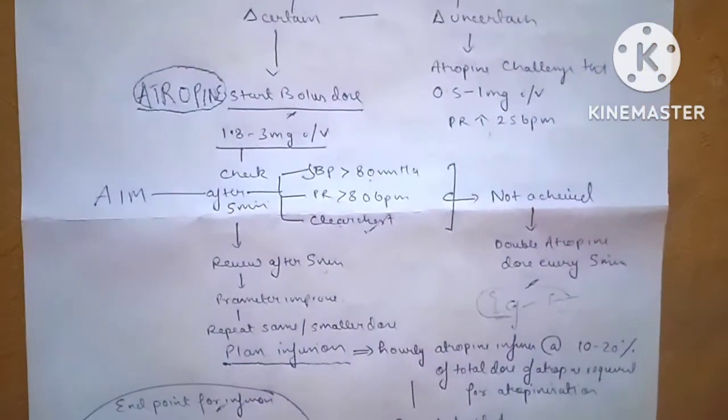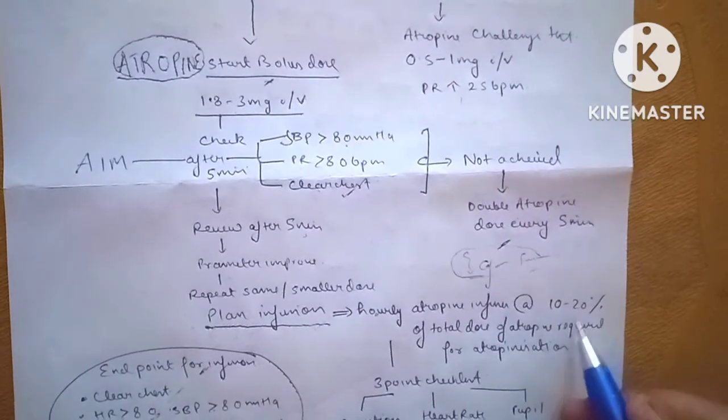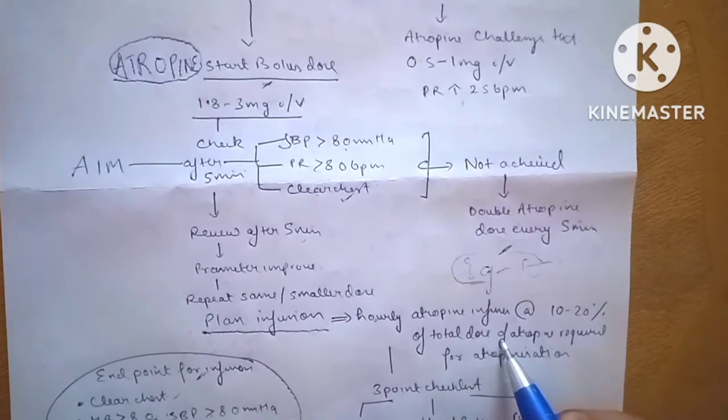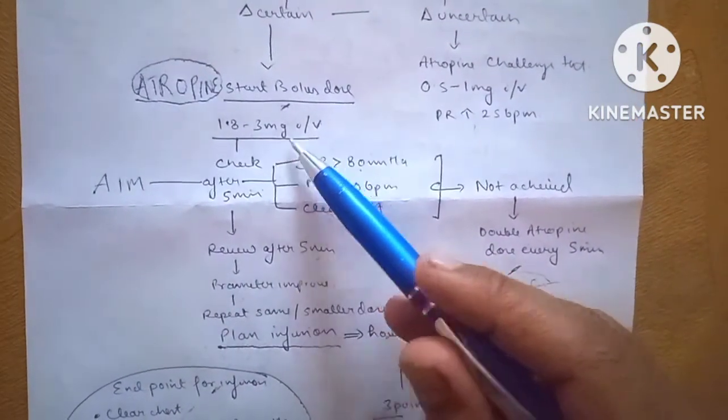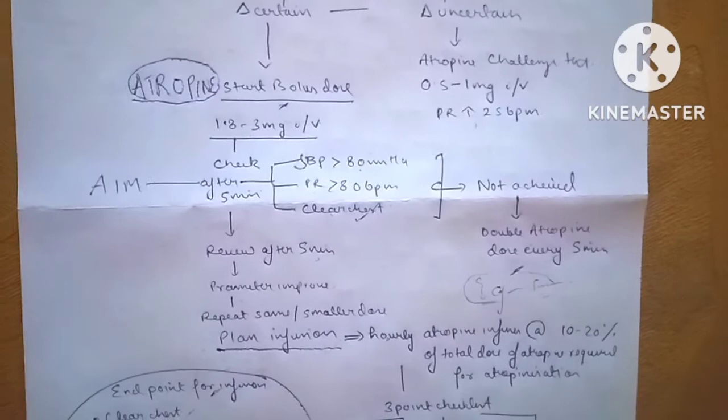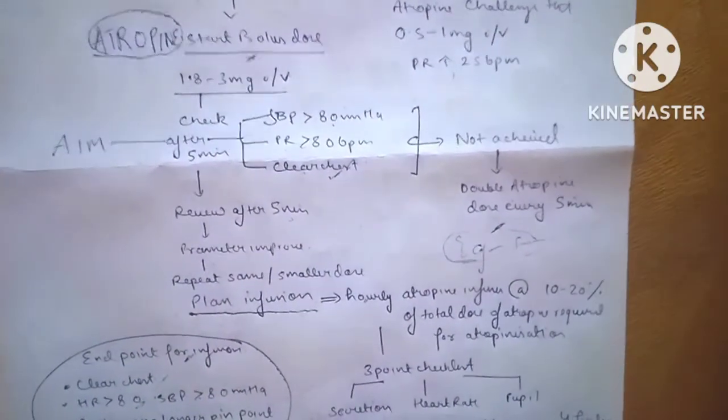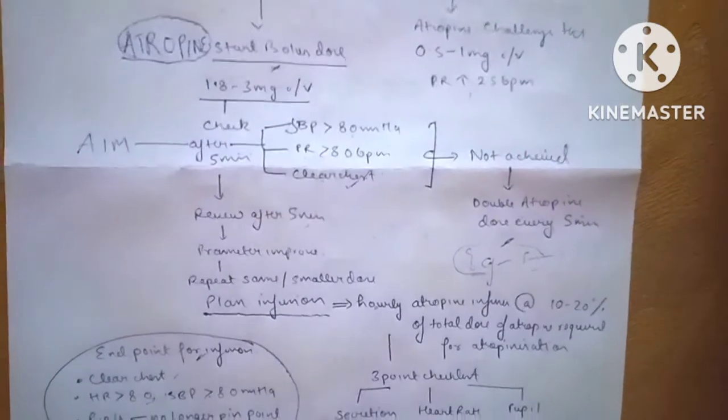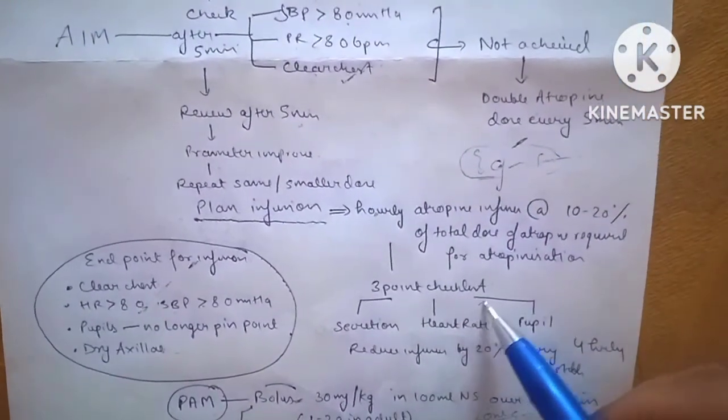Infusion of atropine is given hourly at a dose of 10 to 20 percent of the total dose of atropine that was required for atropinization. Say the dose of atropinization was 3 mg, so we will start the infusion at 20 to 30 percent of 3 mg every hourly.